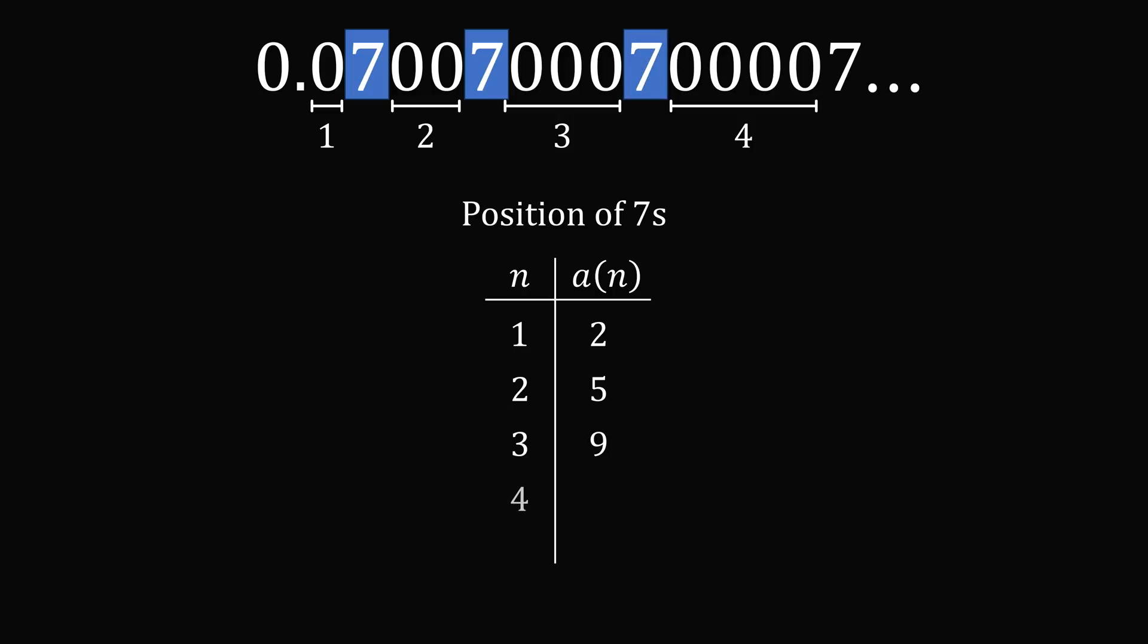The fourth appearance of seven will be in spot number 14. So we have a pattern here, and we want to figure out what a(n) is equal to. But we first have a recurrence relationship: a(2) = a(1) + 3, a(3) = a(2) + 4, a(4) = a(3) + 5. Each time we're adding one more than the previous.